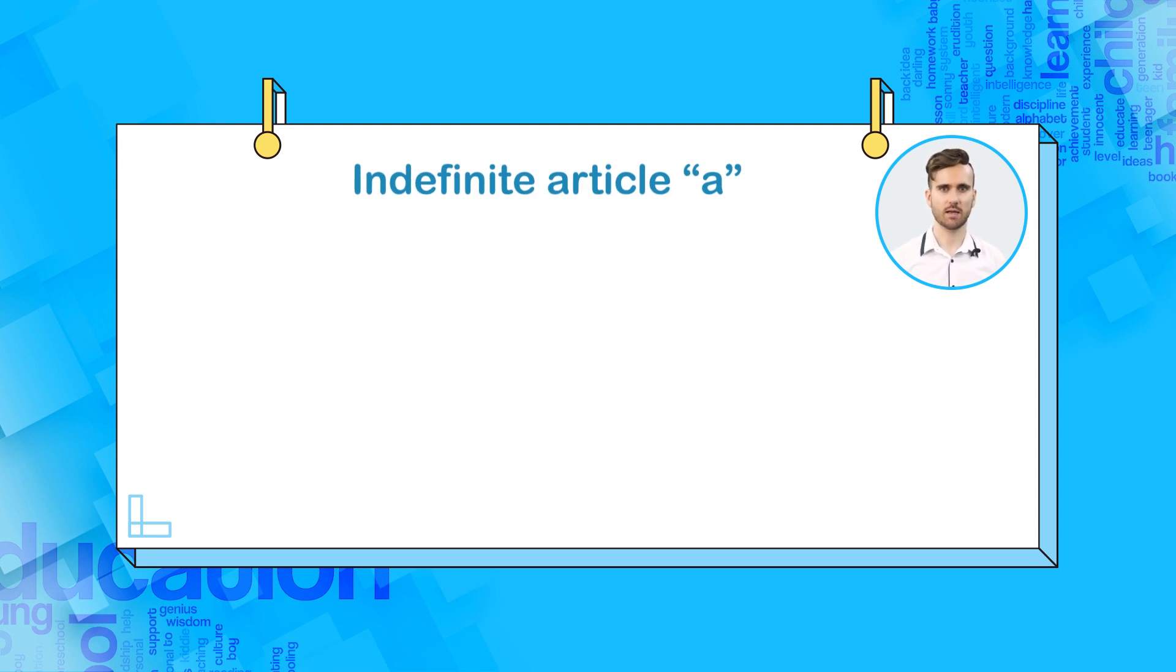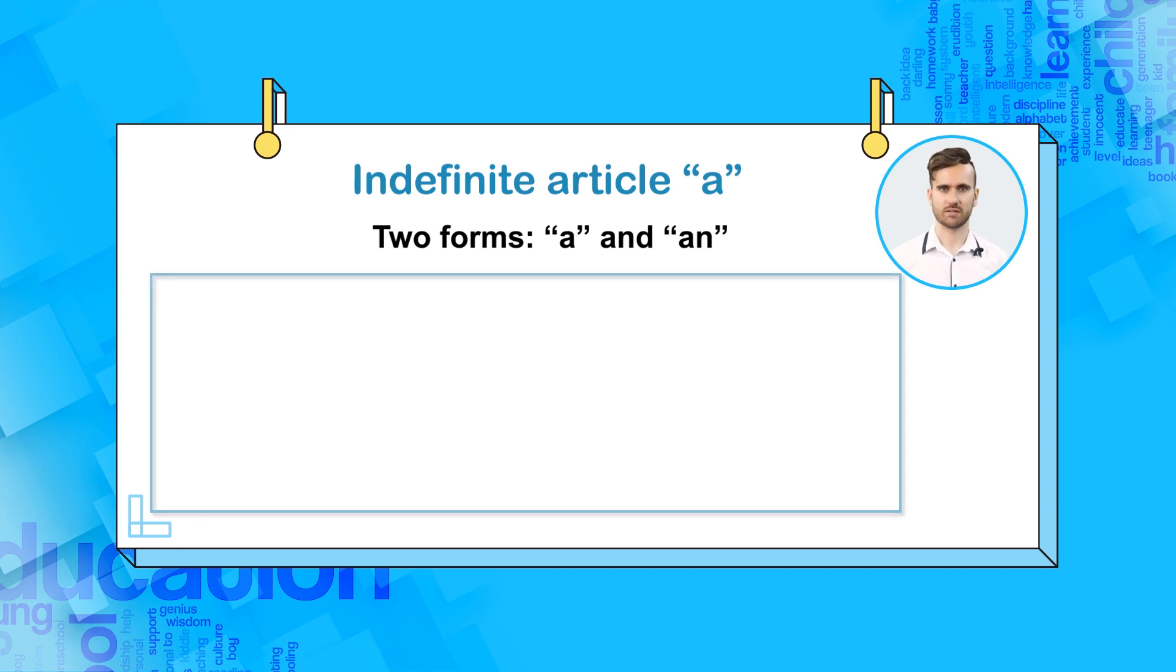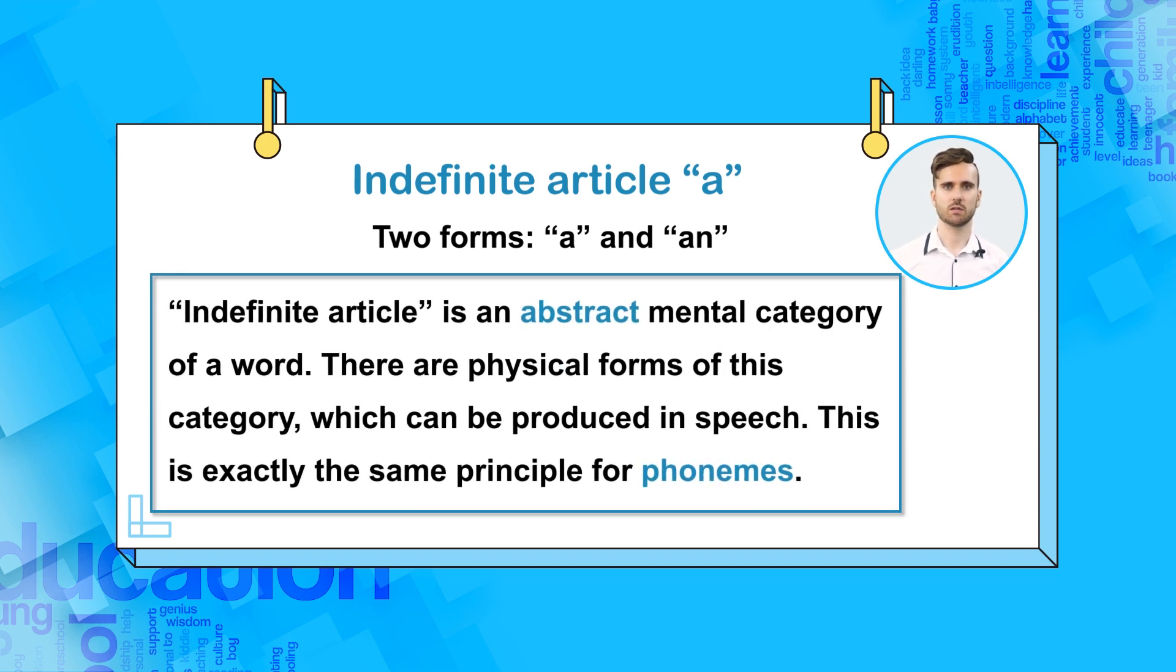Perhaps the simplest in English is the indefinite article a. Actually, we are not focusing on the sound, but on the word. Thus, this is actually a relationship between allomorphs and morphemes. But the principle is identical. As you know, there are actually two forms of the indefinite article: a and an. Because these are two different ways to say the indefinite article, we can say that they are two different members of the abstract mental category of the word indefinite article. As a side note, perhaps this helps to illustrate the concept of phoneme.